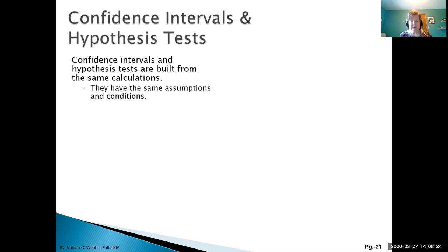They have the same assumptions and conditions because they use the same model - in this case, the sampling distribution of proportions. You can approximate a hypothesis test by examining a confidence interval. It's not the exact same procedure; note the keyword is approximating, not running the exact same thing.